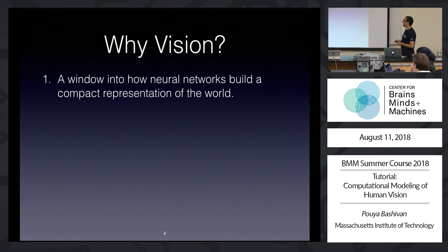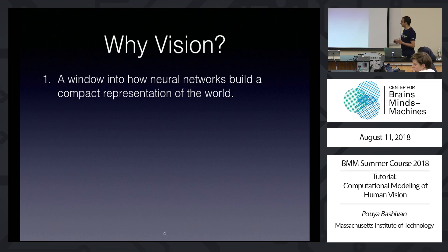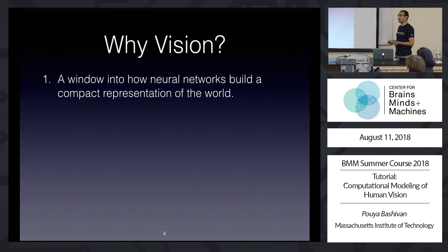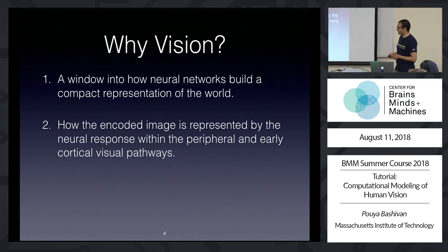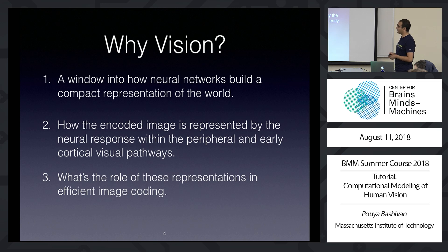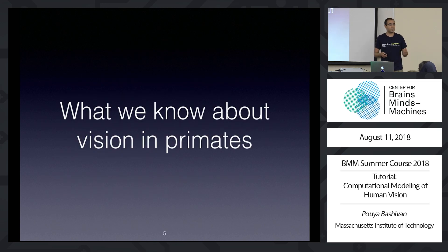Going back to the second question — why vision? I think many of you would agree that vision, or maybe any part of the cortex, is a window into how neural networks build a compact representation of the world. That's our attempt to understand how the brain learns and does all the interesting things it does. To get there, we need to answer how an encoded image is represented by neural responses within the peripheral and early cortical visual pathways, and what role these representations play in efficient image coding and behavior.